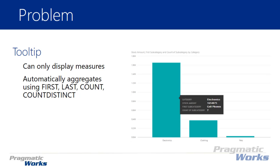One limitation is that tooltips can only display measure values. You'll notice it does show the category that's part of the chart, but if you want to add anything additional — say your own additional tooltips — they do need to be brought in as measures, either implicit or explicit.